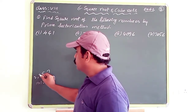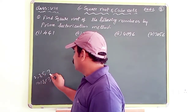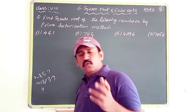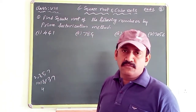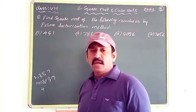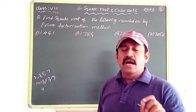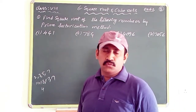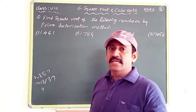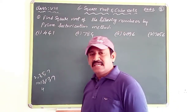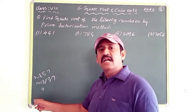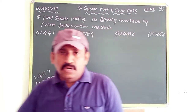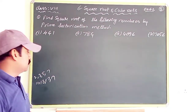For example, take 4. The number 4 can be divisible by 1, by 4, and also by 2 — so it has more than 2 factors. Therefore 4 is not a prime number; it is called a composite number. I hope you understood what prime numbers are.